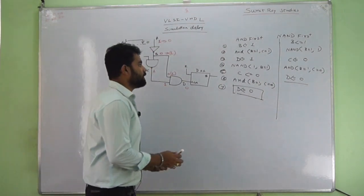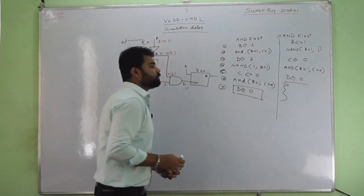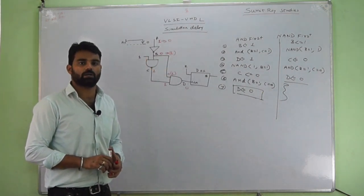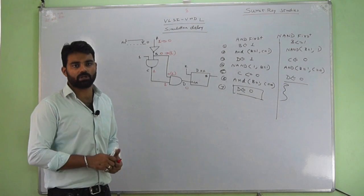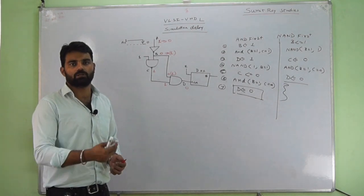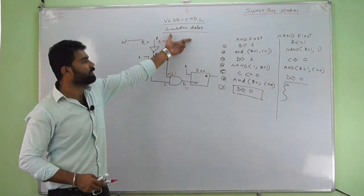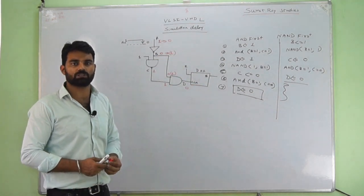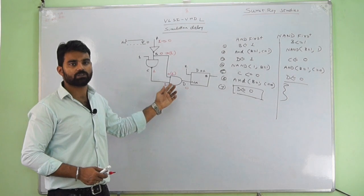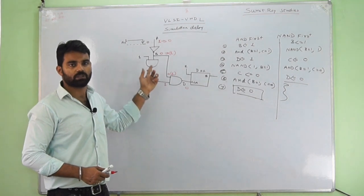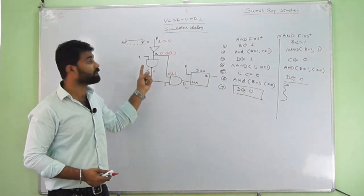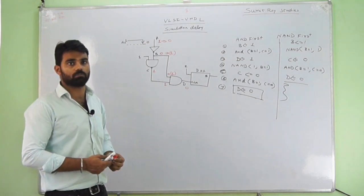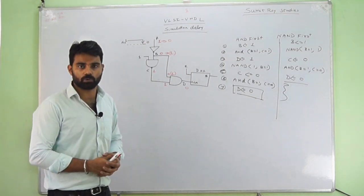This is the difference: the intermediate states differ depending on whether NAND or AND works first, and that is why it is known as simulation delay. In the simulation process, if one gate works faster than the other, there will be a delay. If the other gate works faster, there will be a lesser time delay to give the output.